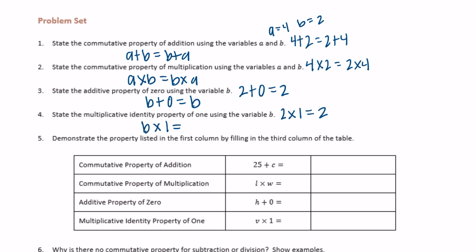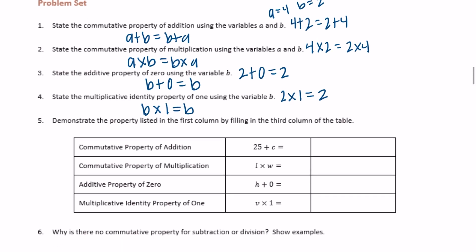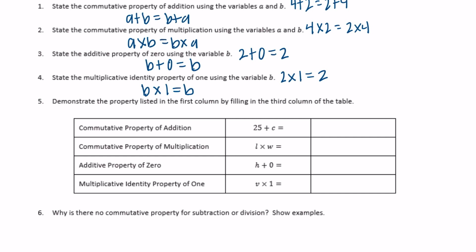Demonstrate the property listed in the first column by filling in the third column of the table. The commutative property of addition: 25 plus c, if we were to show that property, it's just flipping, so it equals c plus 25. Commutative property of multiplication: length times width, for example if we're doing area, length times width is the same thing as width times length. H plus zero equals just h, and v times one equals v.